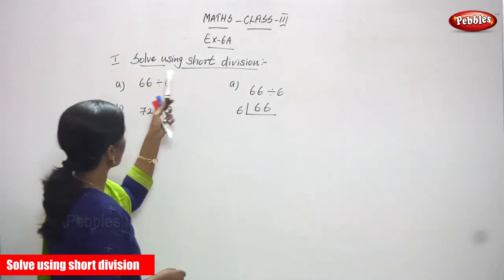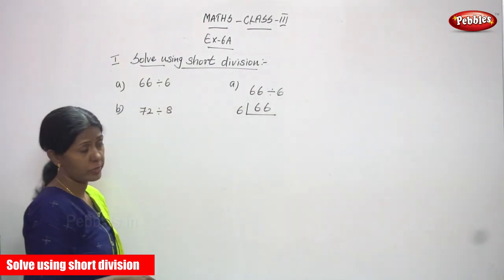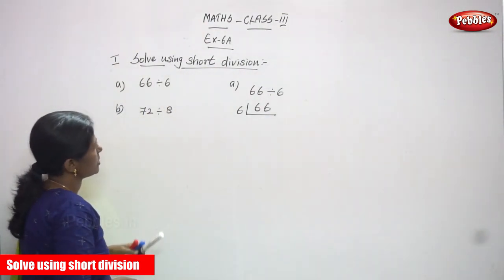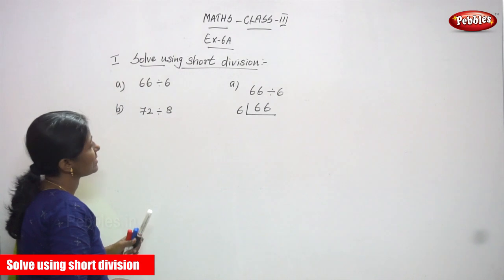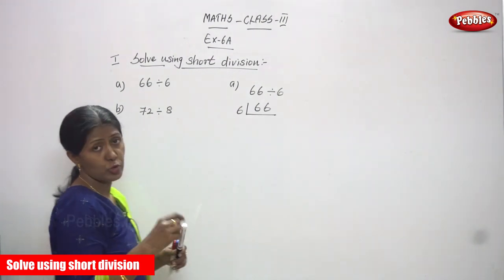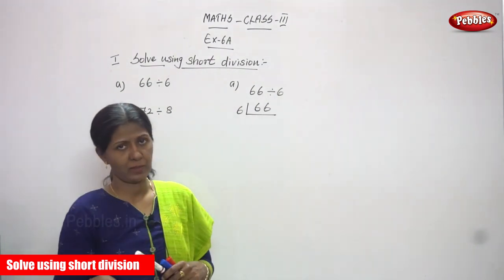Now we are going to solve using short division. First question, A question: 66 is divided by 6. This is the short division method.